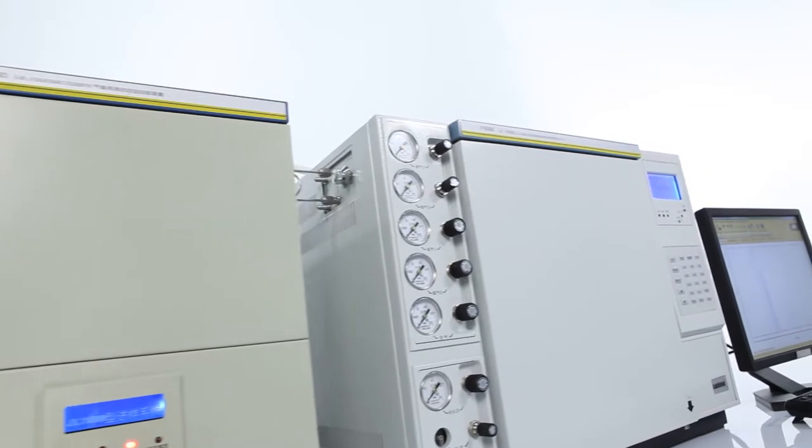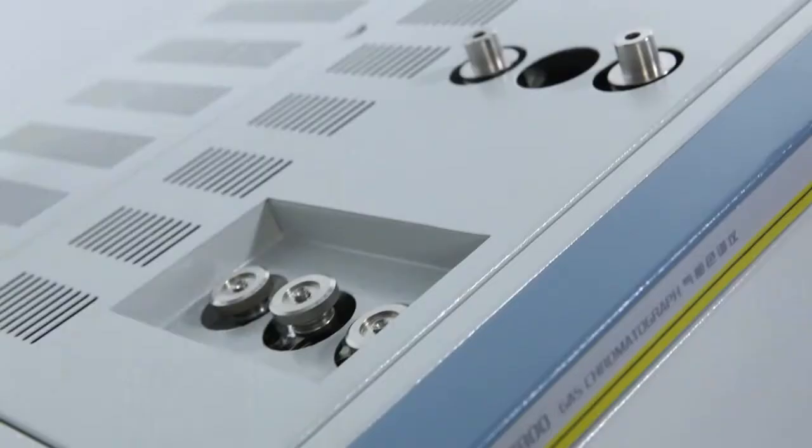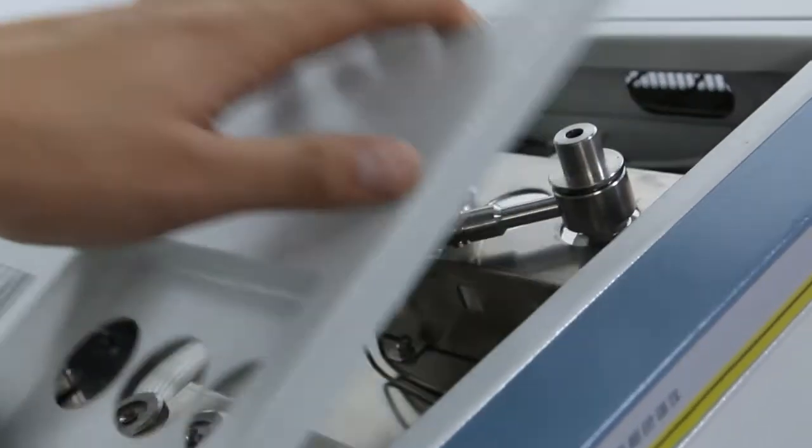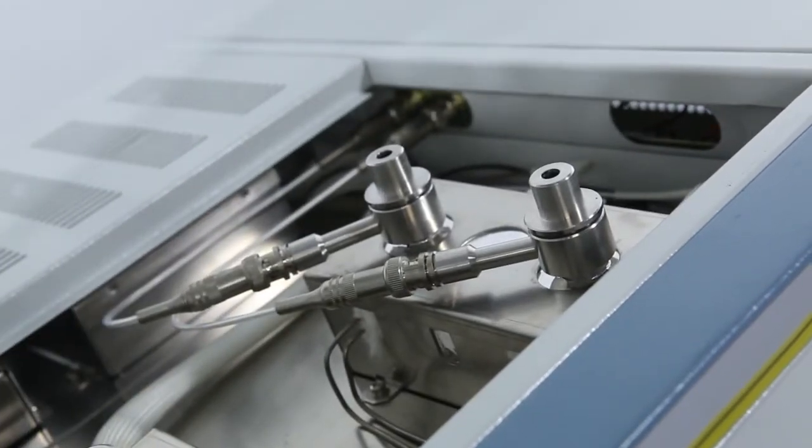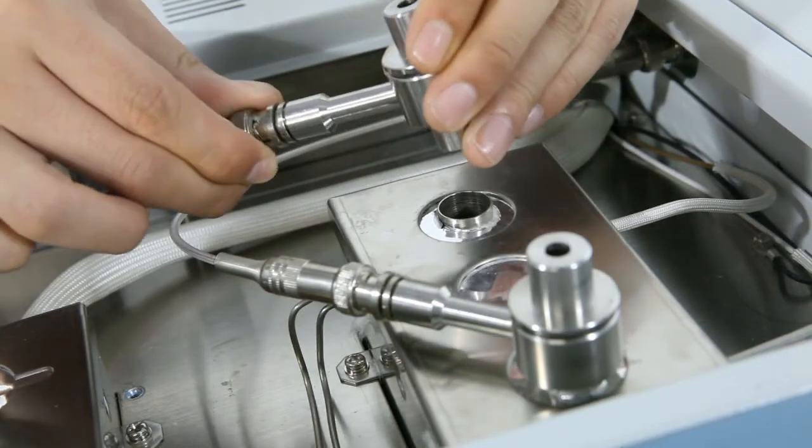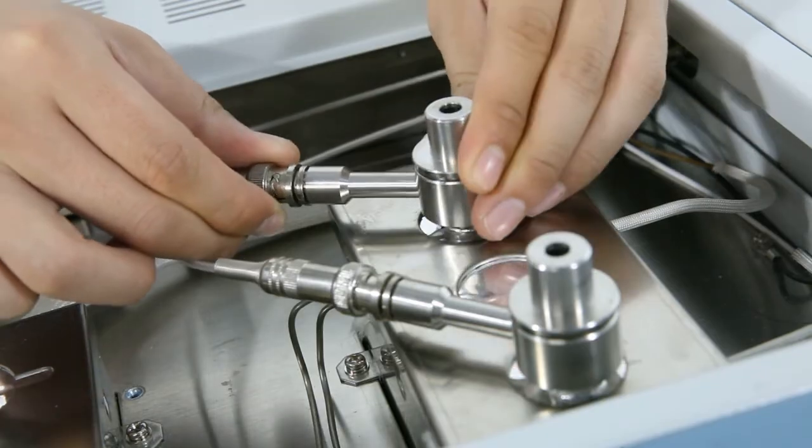The GC7800 gas chromatograph adopts modular design, which means simplified system structure, independent functions, convenient upgradability, and easy maintenance.